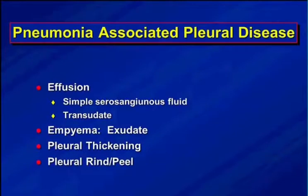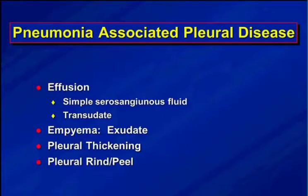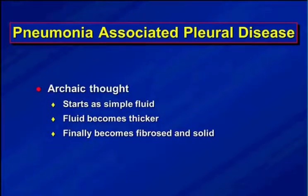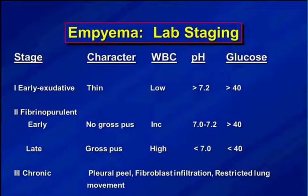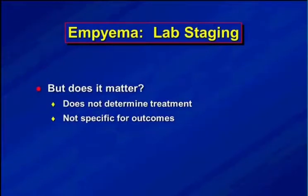When you have fluid and pleural disease, it can be simple — an effusion or transudate — then it evolves into an empyema, which is an exudate. There's staging based on Light criteria: early it's thin, then purulent and fibrous, then a peel over time. But the question is, does it matter? Because it doesn't determine therapy and it's not specific for outcomes — so it really doesn't matter at all.